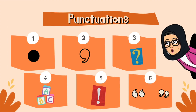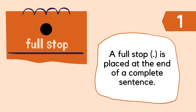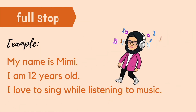Today we are going to look into 6 punctuations. Number 1: Full stop — Titik. A full stop is placed at the end of a complete sentence. Titik diletakkan di hujung ayat yang lengkap. For example: My name is Mimi. I am 12 years old.